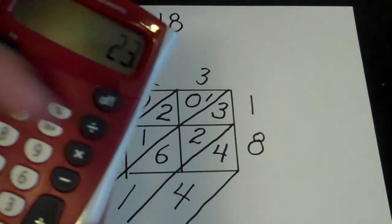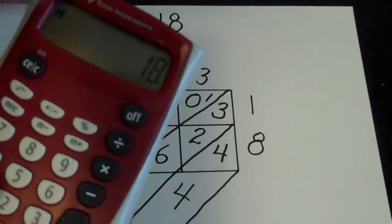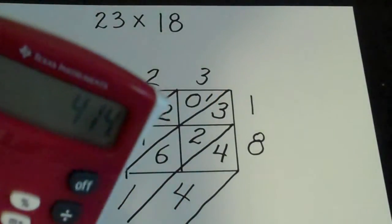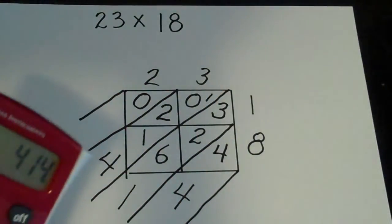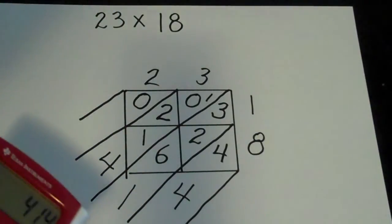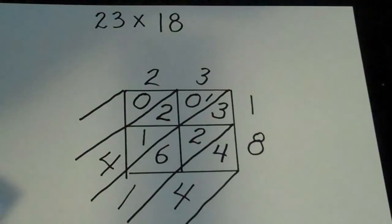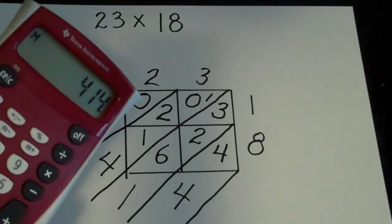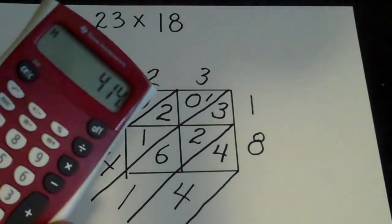And I just have my calculator here just ready to show, yeah so 23 times 18 is 414. So it's a cool way to multiply. No, I wouldn't suggest multiplying it this way every time because you can see it takes up a lot of space, it is going to be a little time consuming, but it is a neat way to show students a different way that they can multiply. Hope you enjoyed it, bye.